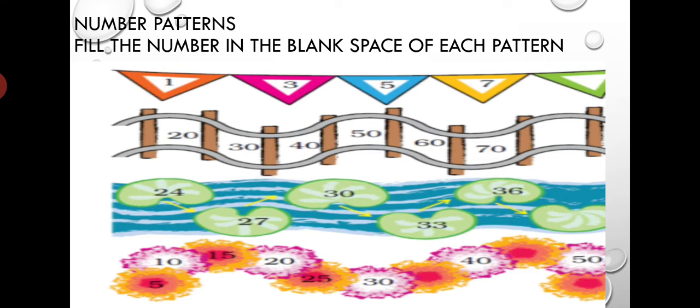For example, question number one: look at one, one, three, five, seven. One, three, five, seven, so what will be the next number? First of all, look: one, three, five, seven. These numbers are odd numbers, so after seven the next number is yes, it is nine.